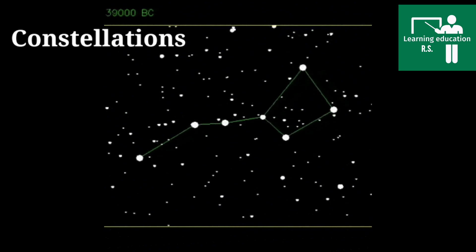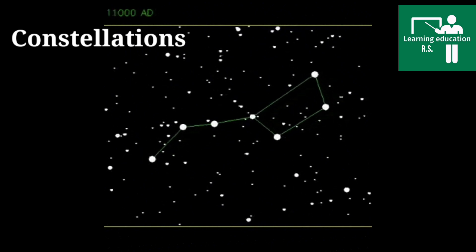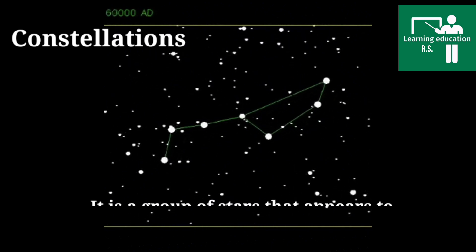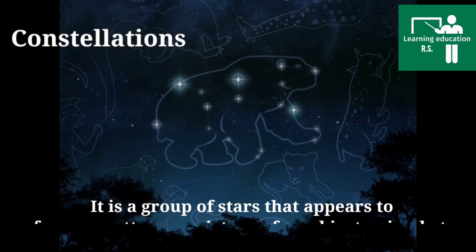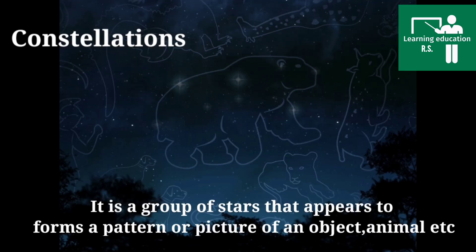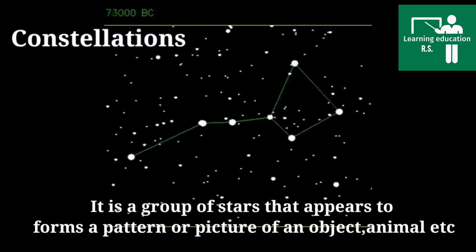Now, constellation. Constellation is the group of stars that appears to form patterns or pictures which we see in the sky. It's a group of visible stars that we see in the sky.